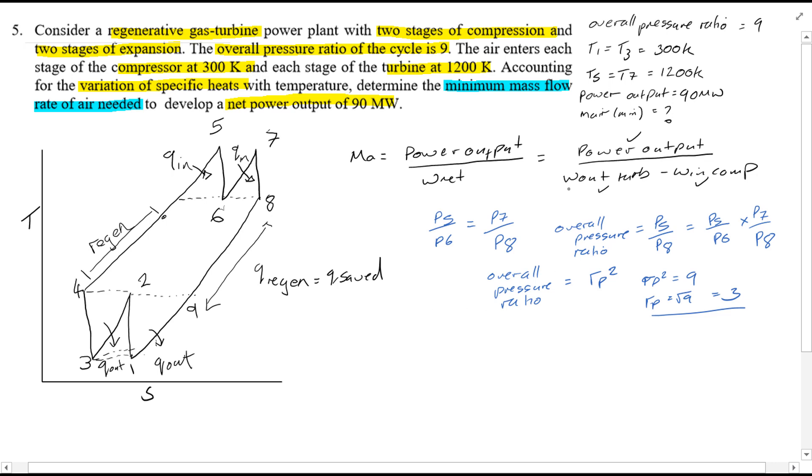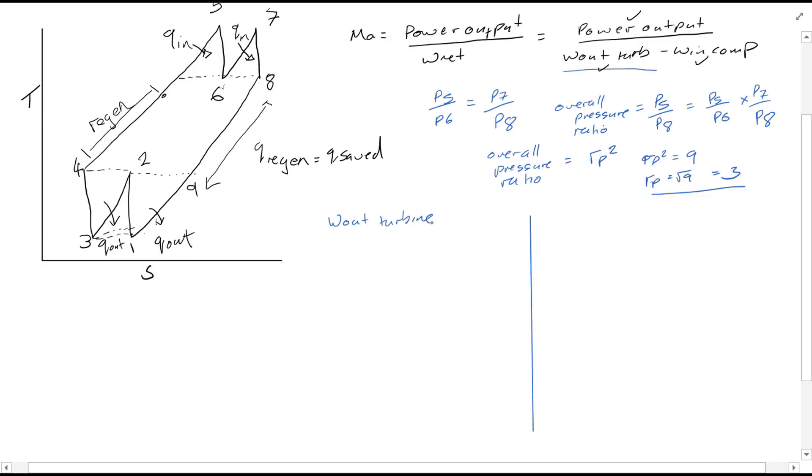So we are going to find work out from the turbine first of all. W out from the turbine is equal to 2 bracket h5 minus h6, since there are two turbines. In order to find work out from the turbine, we need to find h5 and h6.